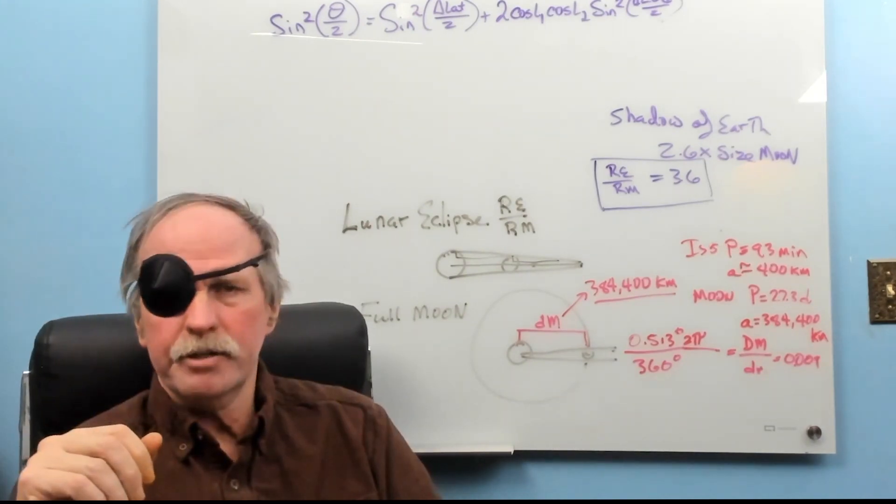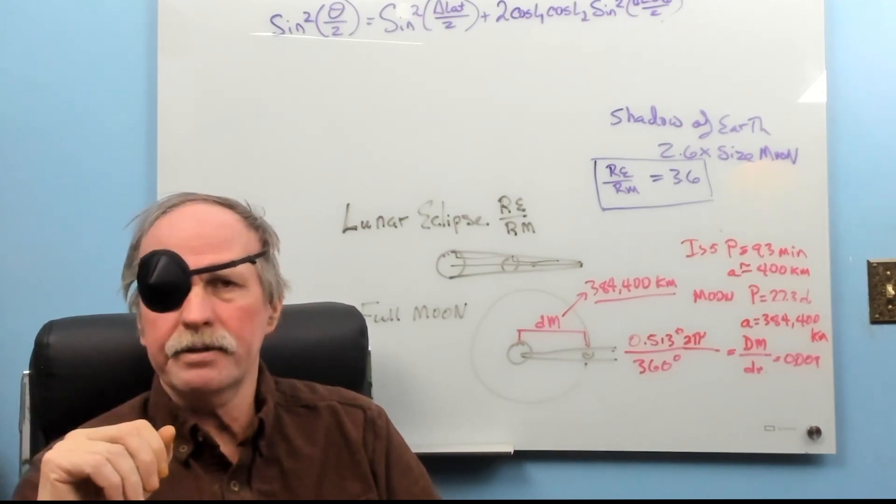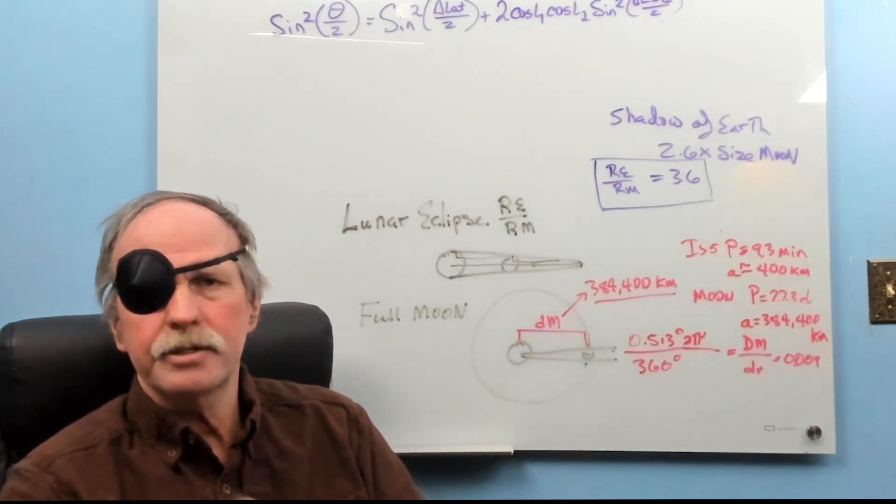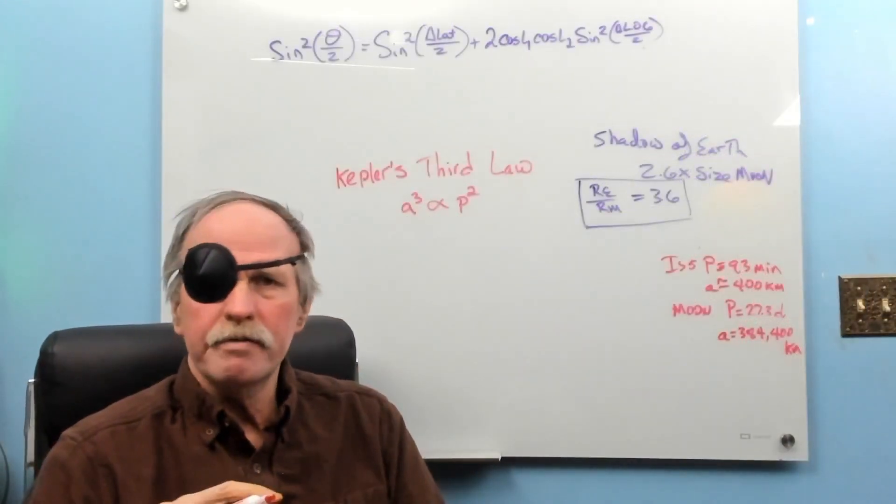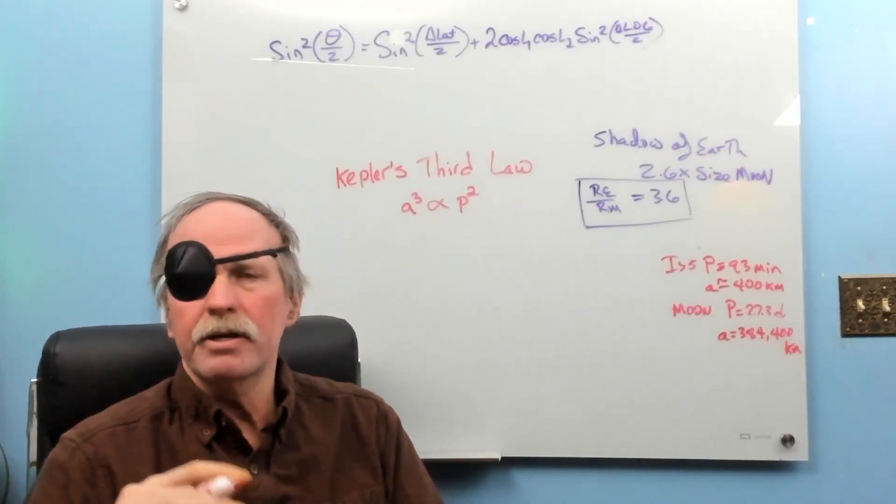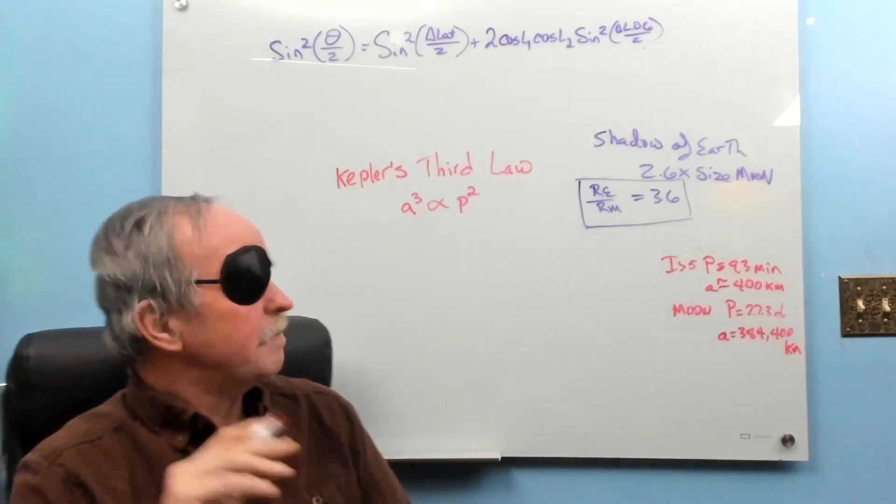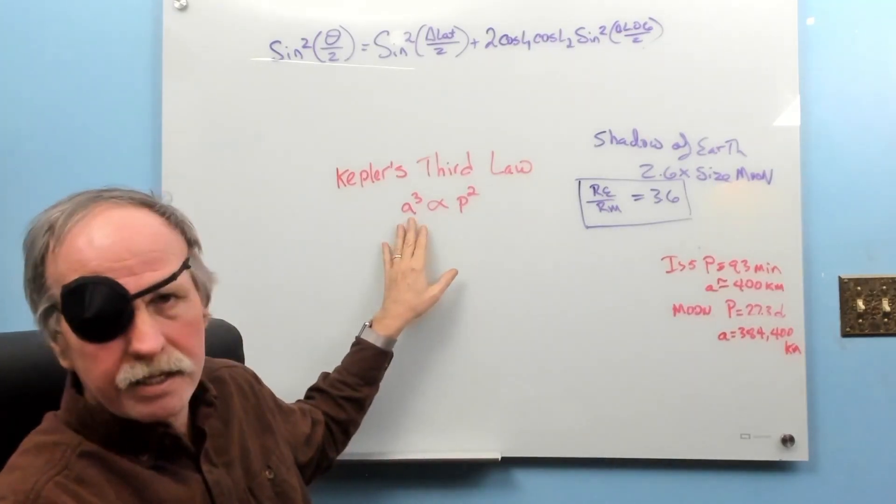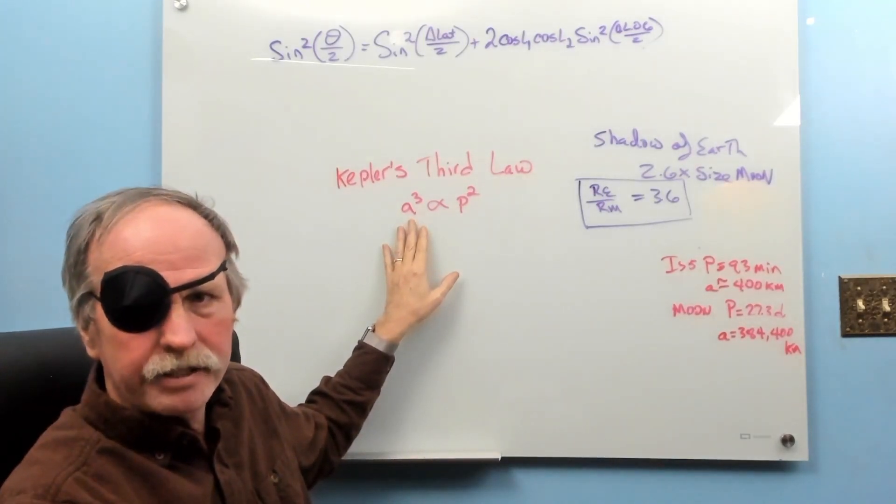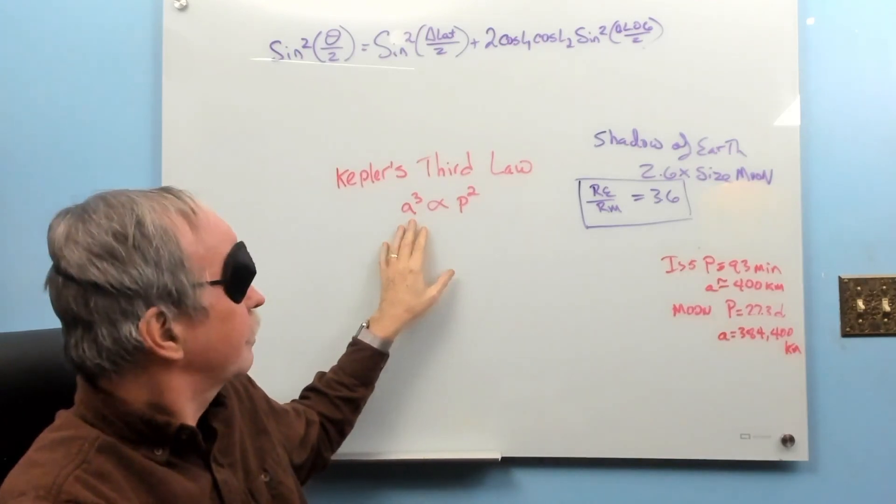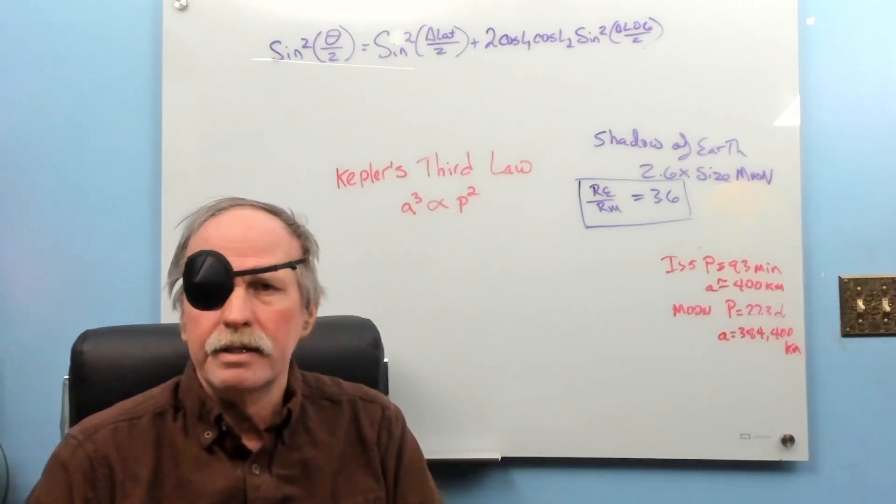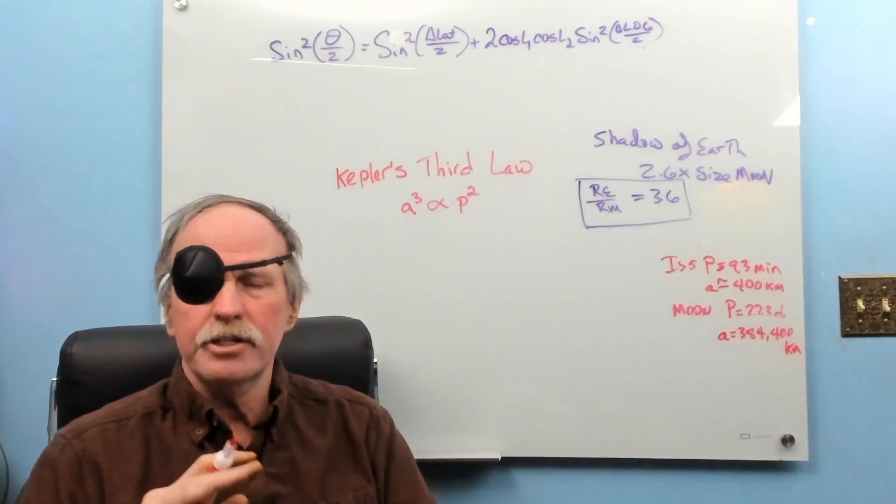But is there another measurement that we can take to try and figure out the radius of the Earth? Turns out there is. Now, when describing the orbit of bodies, we look at something called Kepler's Third Law. And Kepler's Third Law says that the axis of rotation, or the radius of the orbit, cubed, is proportionate to the time of the orbit, squared.